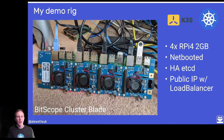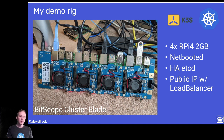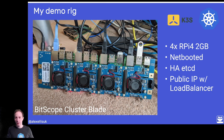My demo rig today is running K3S. It's a Bitscope cluster blade and unlike most Raspberry Pis it's actually net-booted over the network and running off NVMe Express storage inside an Intel NUC. All of those file systems are pretty redundant and running very fast. We've got redundancy in the control plane with three master nodes and etcd, and it has a public IP address — that's how GitHub Actions will be able to deploy a new version of my code straight into my house.